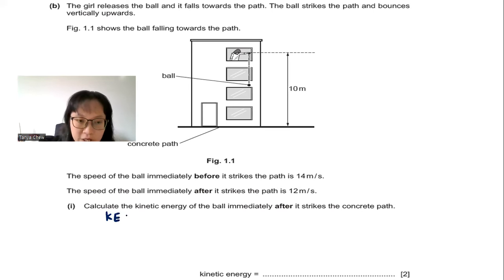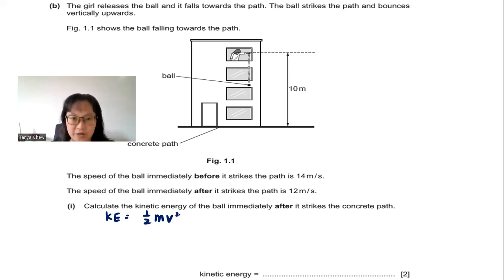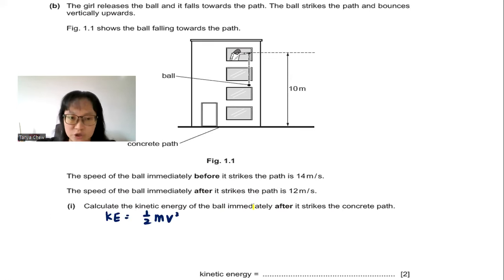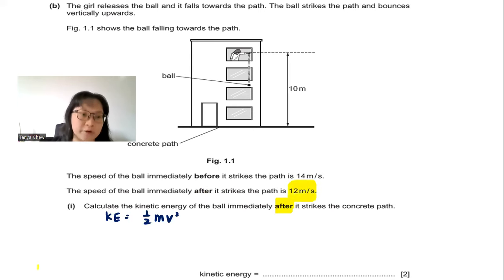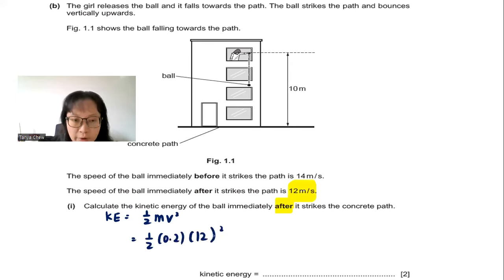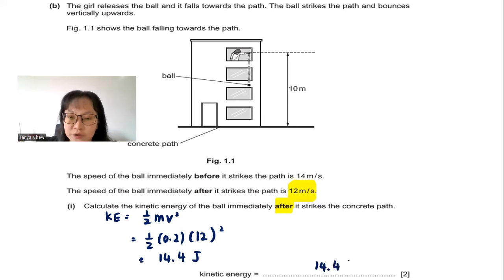Kinetic energy KE = ½mv², where m is the mass and v is the speed. Since we need the KE immediately after striking, I use the speed of 12 m/s. Mass is 0.2 kg and speed is 12 m/s. Squaring it gives 14.4 joules, or 14 joules — expressed to three significant figures.